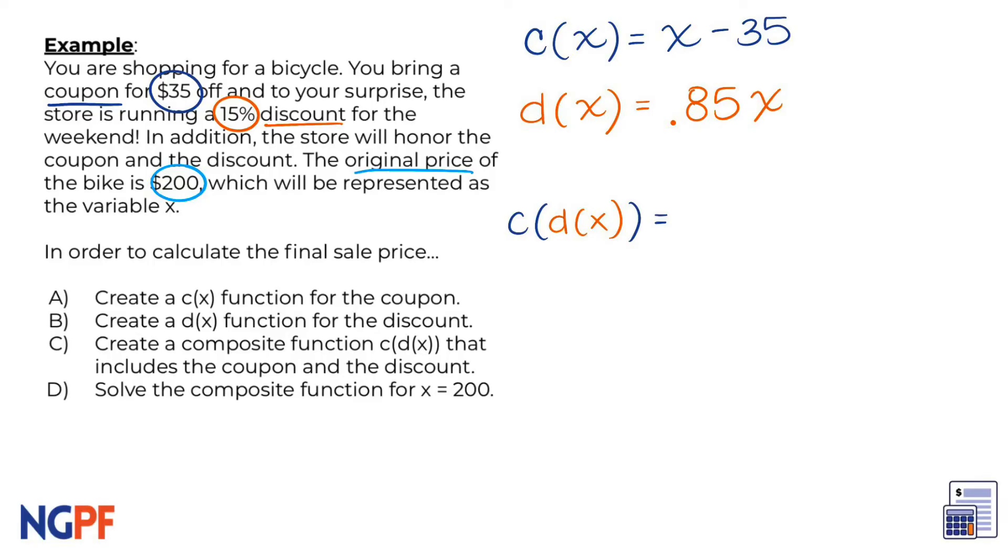Exactly, because the d(x) is inside the c(x) we will have to first apply the discount function d(x) before applying the coupon function c(x). In other words, c(d(x)) means that whatever output I get from d(x) will be the input for c(x).